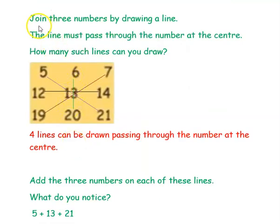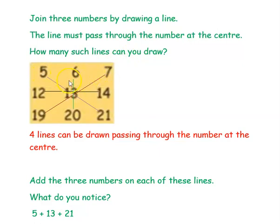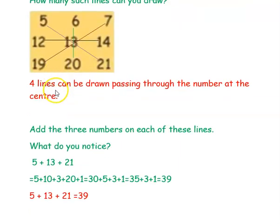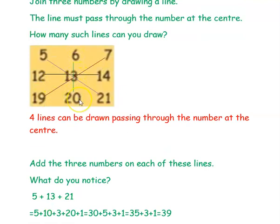To find out the magic, the next question is: join three numbers by drawing a line. The line must pass through the number at the center. How many such lines can you draw? You can join any three numbers by drawing a line, but the condition is the line must pass through the center number, which is 13. So I have drawn 5, 13, 21 — this is one line. Then 6, 13, 20 — second line.